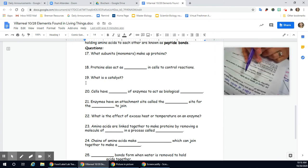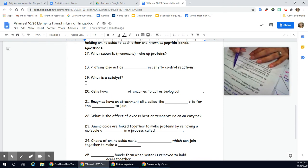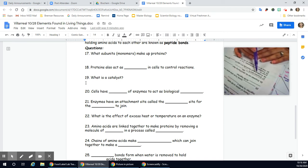23, amino acids are linked together to make proteins by removing a molecule of blank in a process called blank. 24, chains of amino acids make these, which can join together to make a blank. 25, blank bonds form when water is removed to hold blank acids together. 26, enzymes can be identified by their blank and blank and blank. 27, enzymes always end in this.